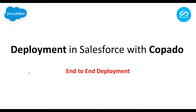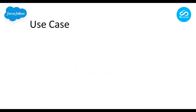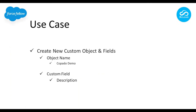Welcome to today's video. I will show you how you can deploy your changes from one environment to another all the way to production. Our use case is: we need to create a new custom object and fields. The object name will be Copado Demo, and we'll create a custom field called Description. I chose this simple use case to help you understand the end-to-end process.